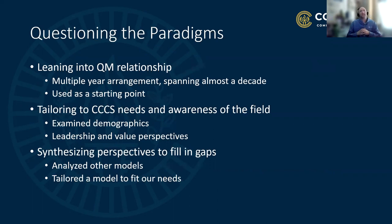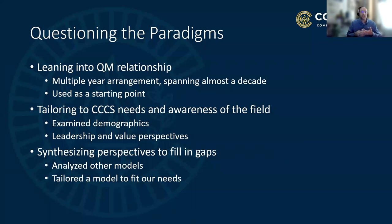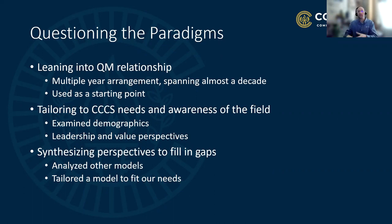This is where we truly begin to question the paradigms. We leaned into our Quality Matters relationship—a multiple-year arrangement spanning almost a decade, since the fifth edition. They moved to sixth edition in the later teens, and are moving to seventh edition later this year. It's a really good course design rubric on how to make a good class. But we used that as a starting point, because we needed something bigger and better—what fits our demographics, what goes to what we need.